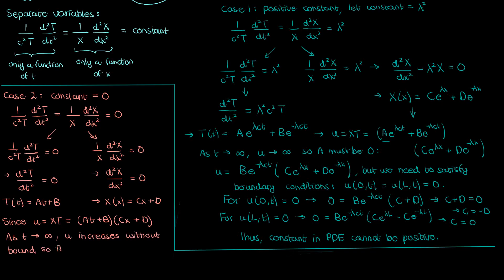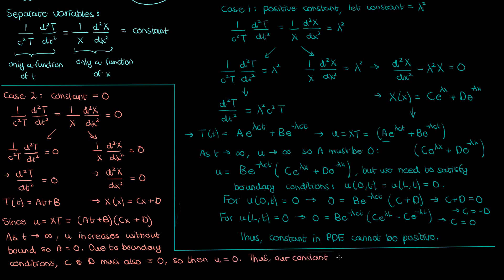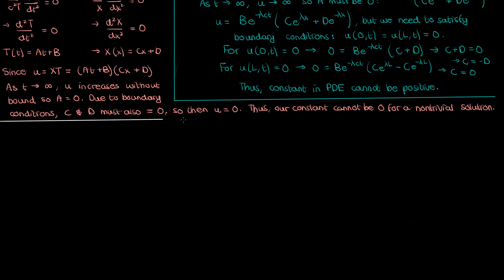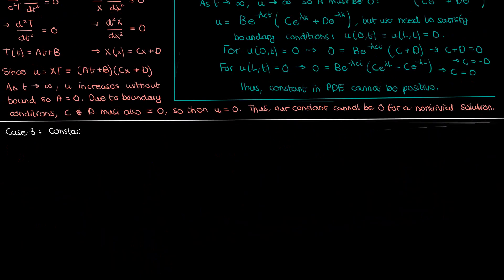When we apply the two boundary conditions with A set to zero, we find that C and D must also be zero in order for the boundary conditions to be satisfied. Since C, D, and A are all zero, we once again end up with a trivial solution. Trivial solutions are useless and don't help us satisfy initial conditions, so we reject this case as well. So the only possibility we're left with is a negative constant, but I'm going to discuss that in the next video.